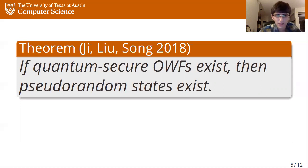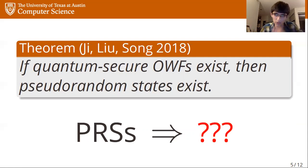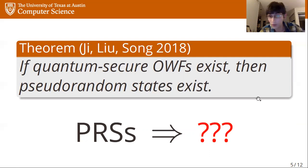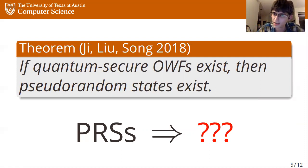One thing that hasn't been explored as much is looking in the other direction: assuming pseudorandom states exist, what else can we say must be true? Can we get other cryptographic primitives? Are there other complexity theoretic implications of pseudorandom states we should be aware of? In fact, this was raised as an open problem in the original paper — whether there is a converse to this theorem, i.e., do pseudorandom states imply one-way functions?